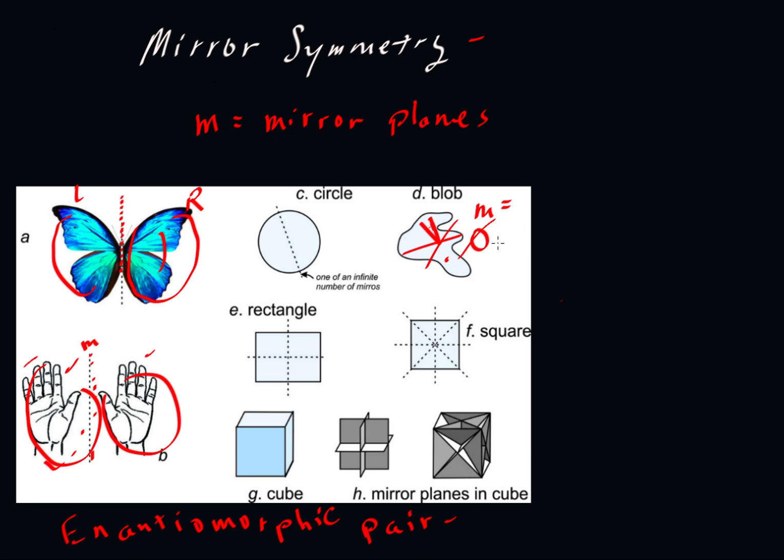The circle is kind of an interesting case. So there is a mirror plane drawn here, and you can see that this side is the mirror image of that side. But notice that we could have drawn a mirror plane here or a mirror plane here. Any line that goes through the center would count as a mirror plane.